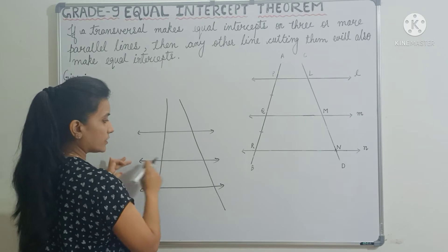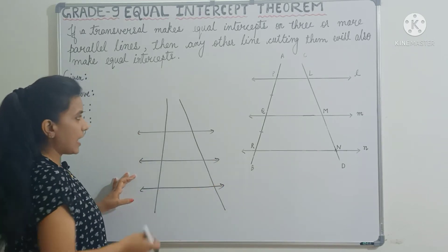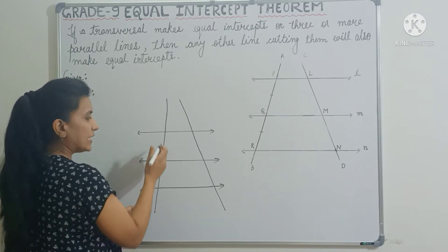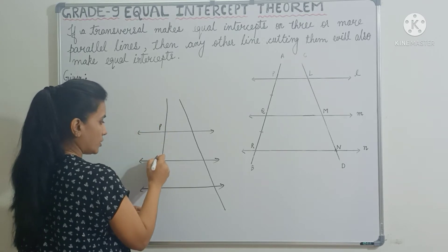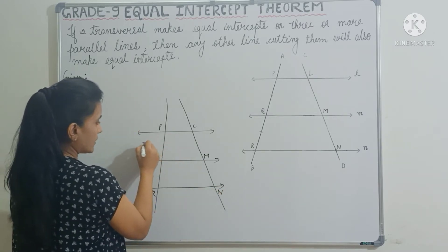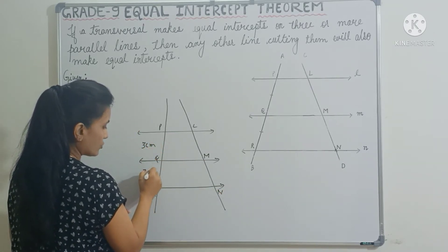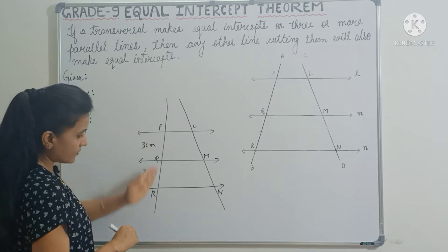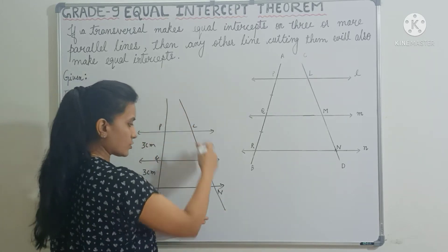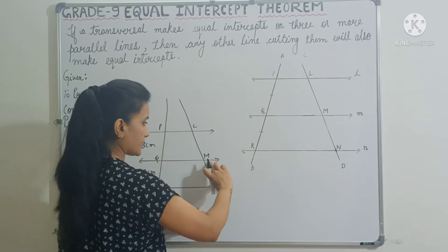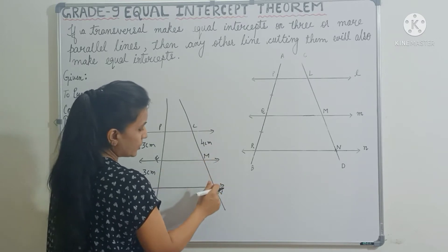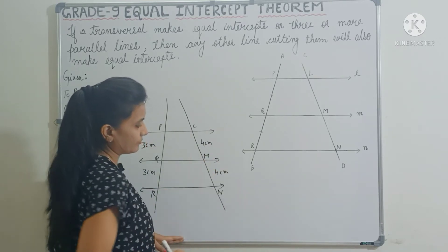Let me repeat. If there are three or more than three parallel lines and a transversal makes equal intercepts on them — let's say the points are P, Q, R and the lines are L, M, N — so if PQ is three centimetres and QR is also three centimetres, then similarly any other transversal will also make equal intercepts. So if LM is four centimetres, then MN will also be four centimetres.